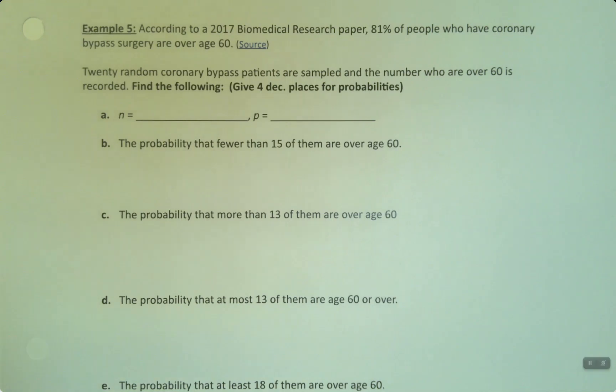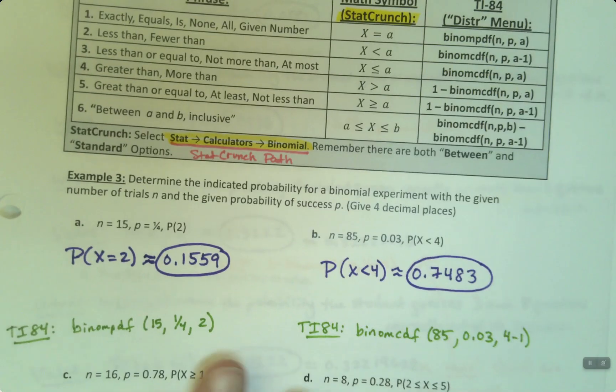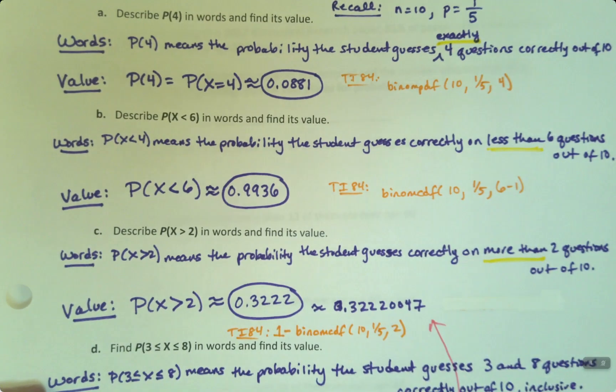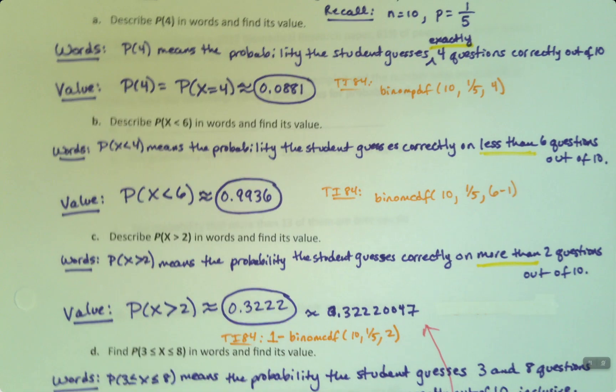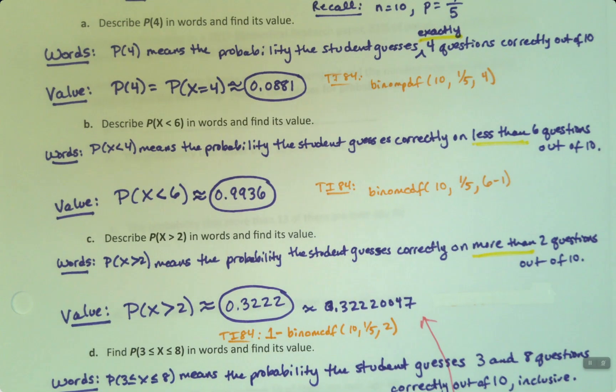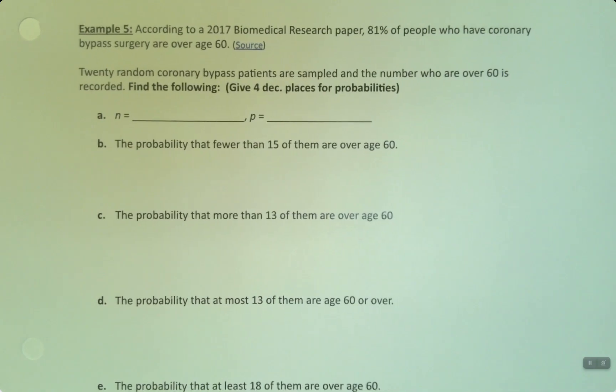Alright, so we've learned the basic rules here and did some very basic problems with no context. Then we did some context, but everything was still given to us in symbol form. We had to think about what it meant in the context. So now we're going to do all context, nothing given to us in symbol form at all.